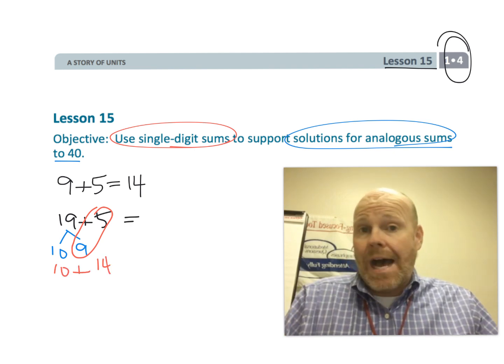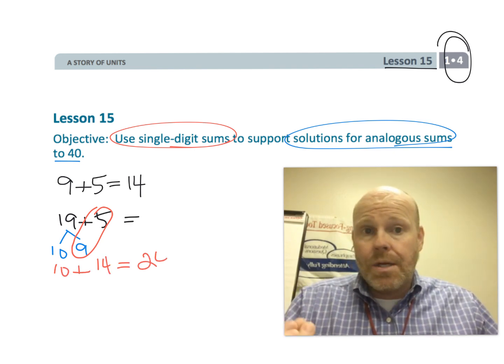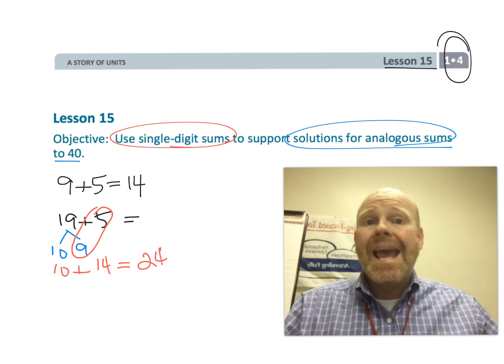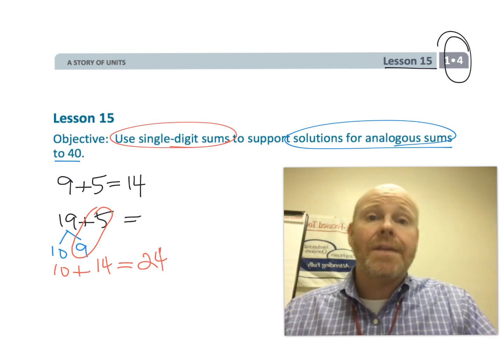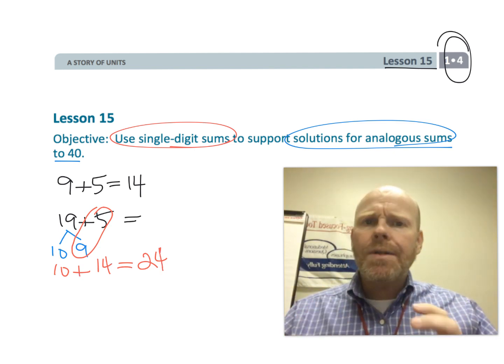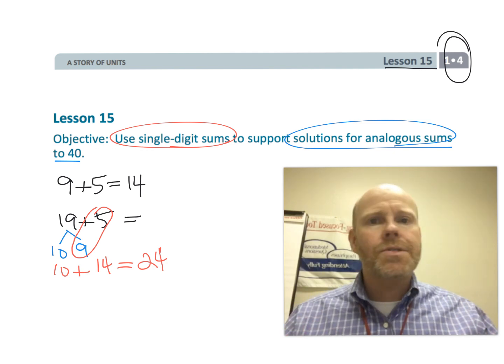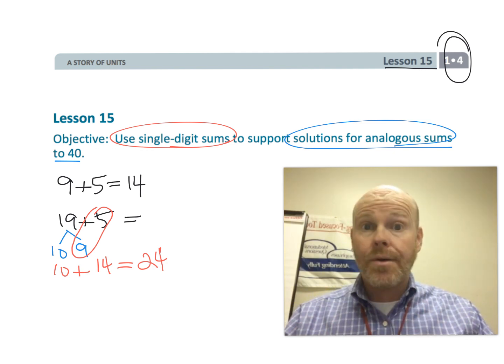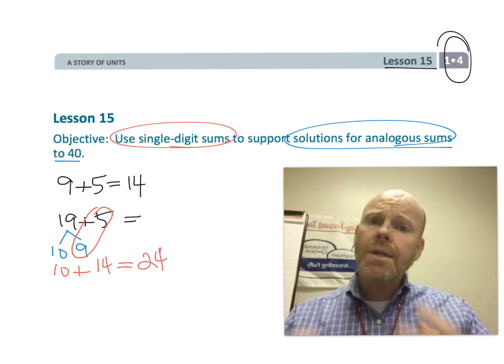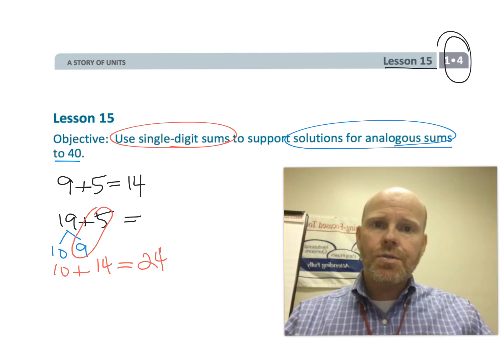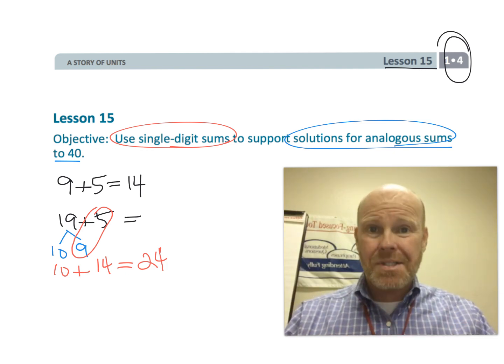Or similarly, if we know that 9 plus 5 is 14, then 29 plus 5 becomes very easy because we add in that extra 20 from the 29. So that's what this lesson is about.